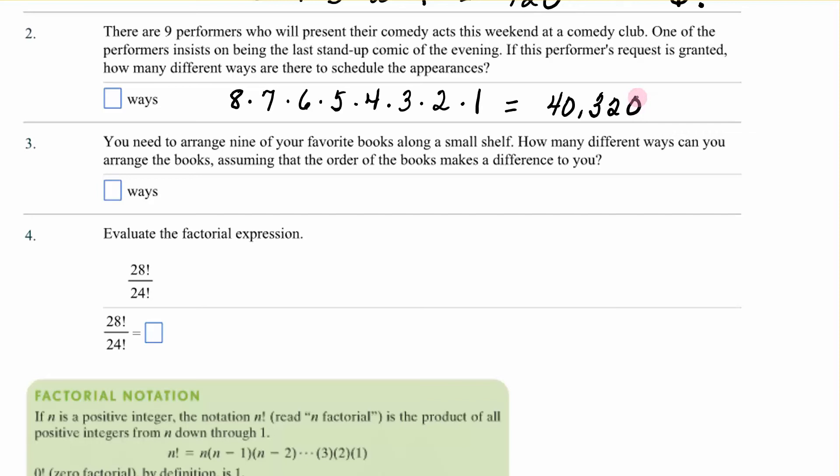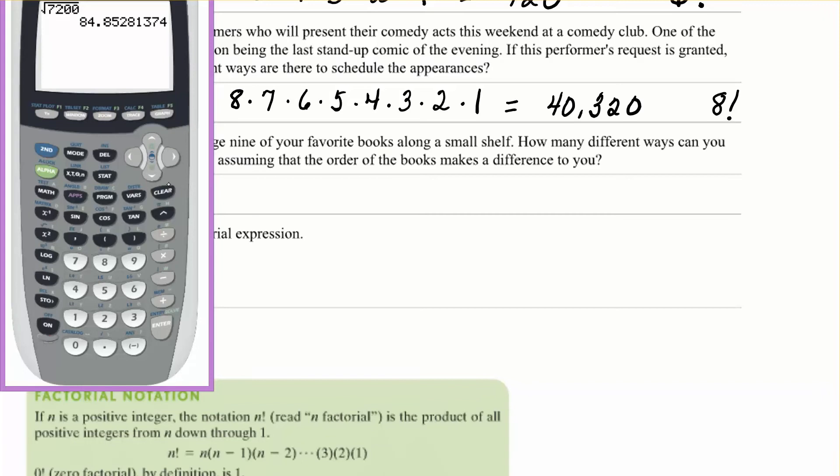Let me go ahead and stop and show you something. If you recognize that this is eight factorial, then let's look at our calculator. And I have this in your notes. If you go to the math button, and you go to the right to the abbreviation for probability, and you go down to the fourth one. You can either scroll down to there, or you can just hit a four. You will get an exclamation point.